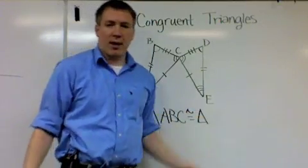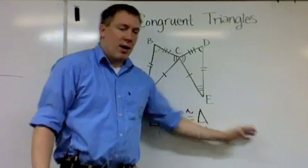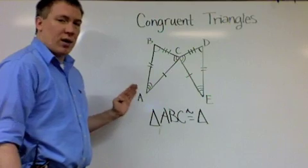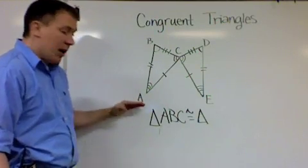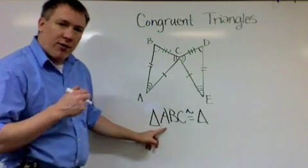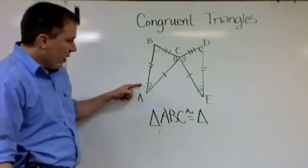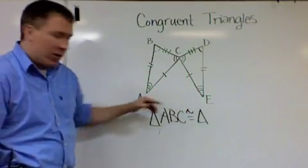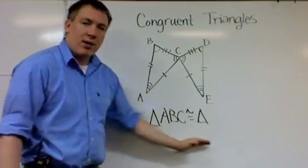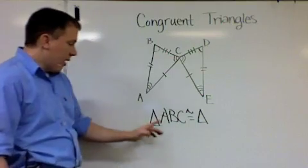So angle A was my first vertex at A, and that corresponds with angle E. So A and E are corresponding. Down here in my triangle congruency statement, I need to write E in the same place as A. Likewise, when I look up here at B, B is the next one. D is in the same place, same angle on the other triangle, so D.